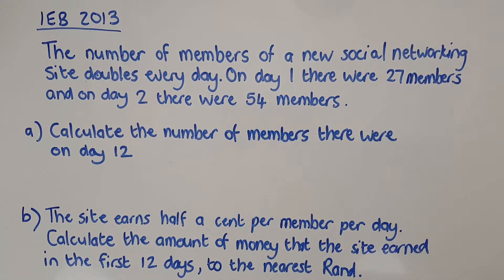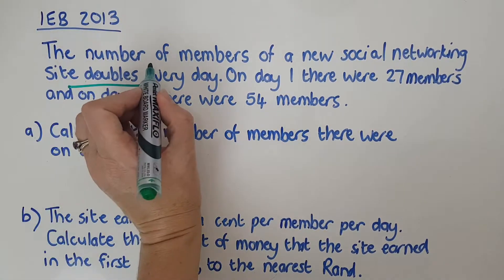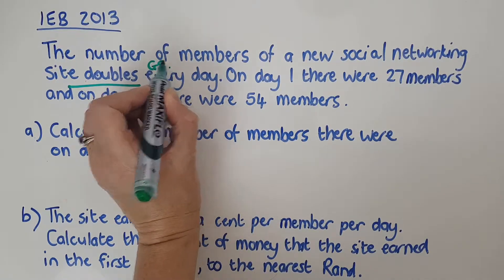But I'm still going to annotate. So the number of members of a new social networking site doubles every day. So immediately I know it's geometric. That's something I would go so far as to say that's content knowledge. You need to know stuff like that. You need to be comfortable with the fact that you can in your own mind do some little tricks before you even approach a question. It doubles every day, so I know I have a geometric series or sequence.